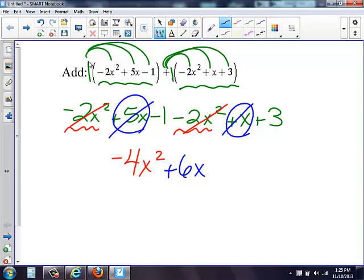Lastly, we have our constants. We have a negative one and a positive three. A negative one and a positive three gives me a positive two.